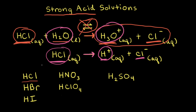Hydrochloric acid is an example of a monoprotic strong acid. Monoprotic means hydrochloric acid has one proton that it can donate in solution. Other examples of monoprotic strong acids include hydrobromic acid (HBr), hydroiodic acid (HI), nitric acid (HNO3), and perchloric acid (HClO4). Sulfuric acid, H2SO4, is a strong acid but it's a diprotic acid, meaning it has two protons that it can donate. However, only the first ionization for sulfuric acid is strong.